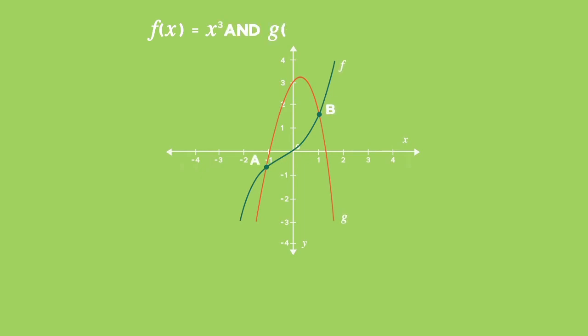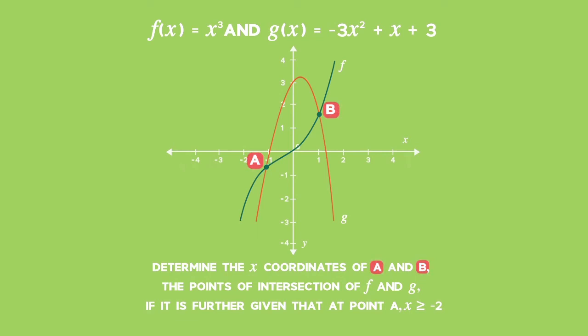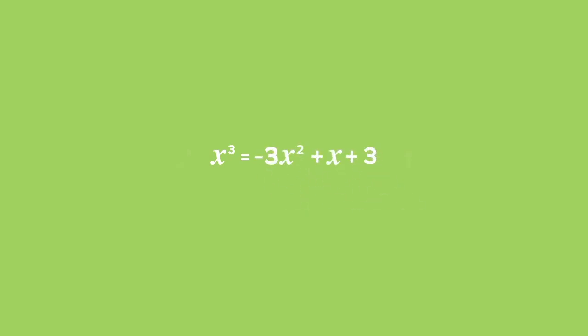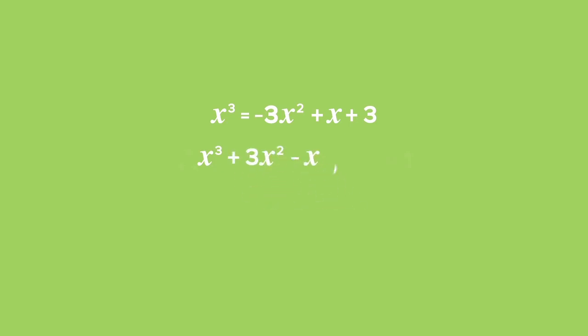Example 4: Application to solve cubic equations. In the diagram, f of x equals x cubed and g of x equals negative 3 times x squared plus x plus 3. Determine the x coordinates of points A and B, which are the points of intersection of f and g, given that at point A, x is greater than or equal to negative 2. To find the coordinates, we equate the equations of the two graphs. Therefore x cubed equals negative 3x squared plus x plus 3, and moving all terms to one side gives x cubed plus 3 times x squared minus x minus 3 equals 0.